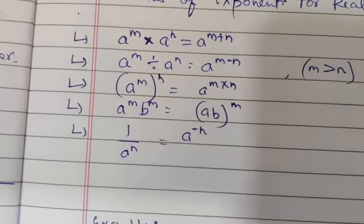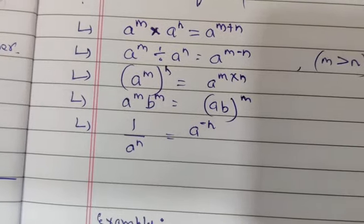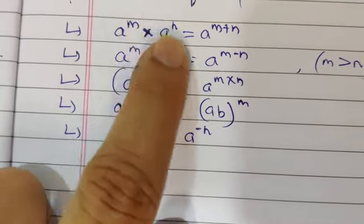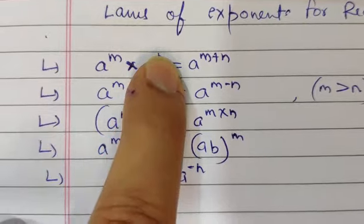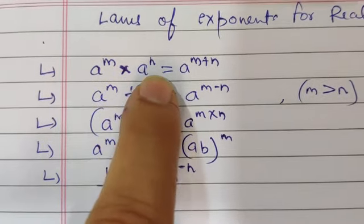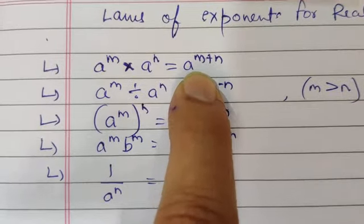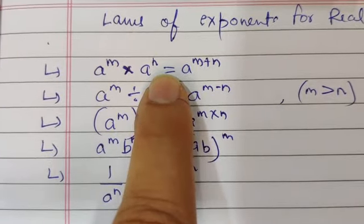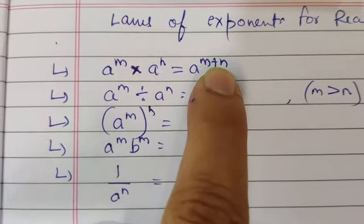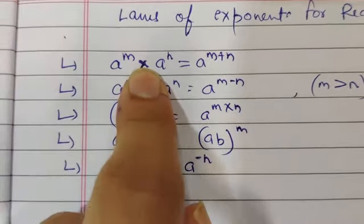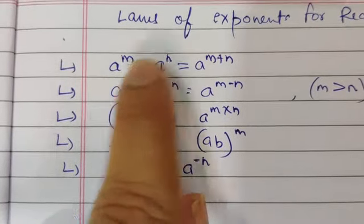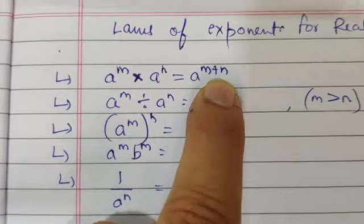The first law of exponents: if the bases are the same and the powers are different — A is the base in both terms, but the powers are M and N. So A to the power M multiplied by A to the power N gives a common base A raised to the power M plus N. Whenever you multiply terms with the same base, you simply add the powers. This is the first law of exponents.